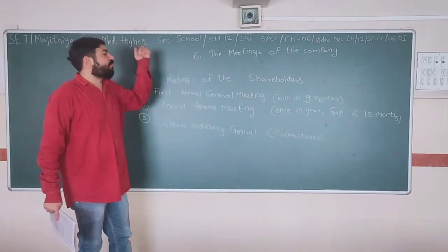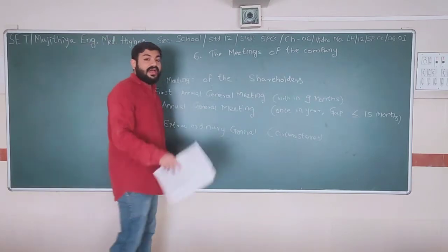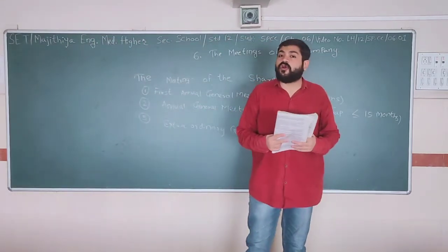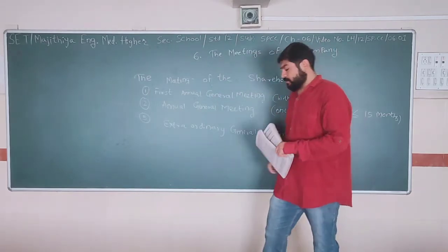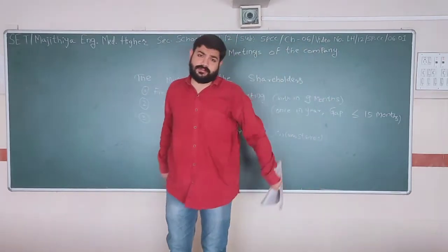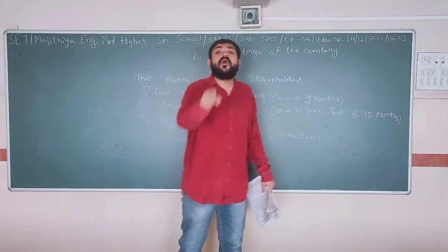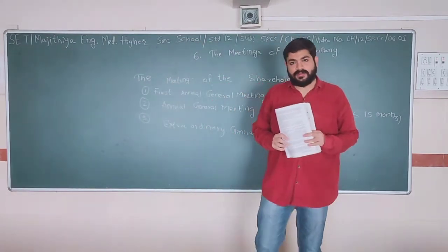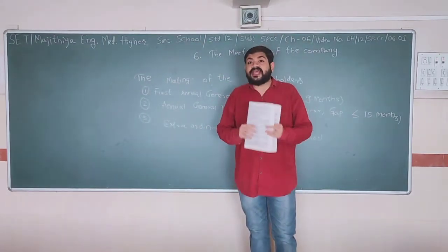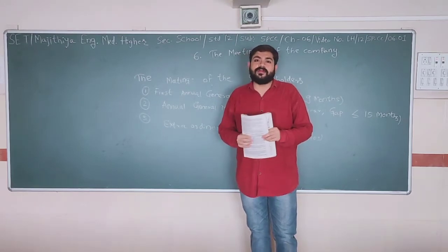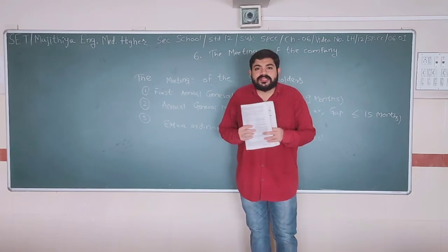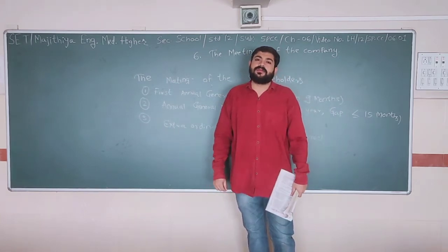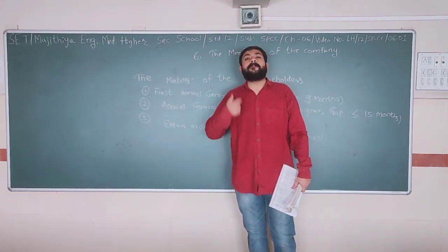It is there in your chapter 6, page number 144 of your textbook. The meetings of the shareholders - who are the shareholders? Shareholders are the owners of the company, so they should be informed of each and every aspect of the company. And how is this information passed? It is passed through meetings.